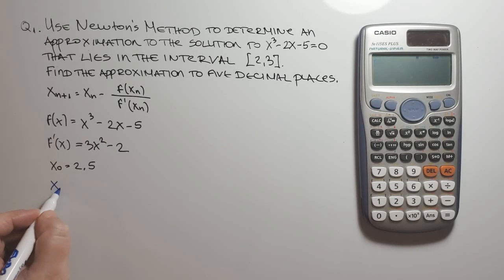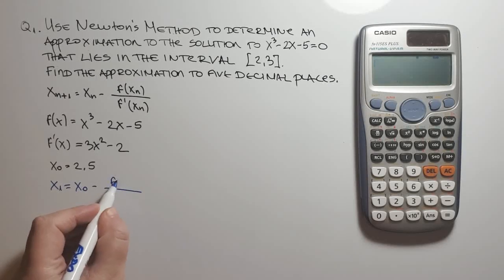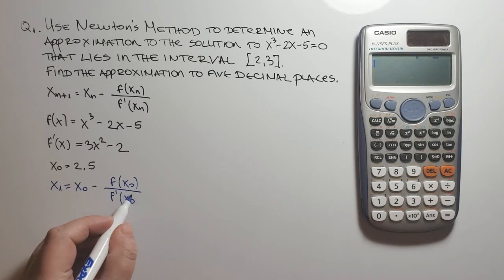So we have x sub 1 equals x sub 0 minus f of x sub 0 divided by f prime of x sub 0.